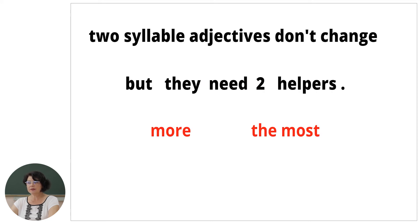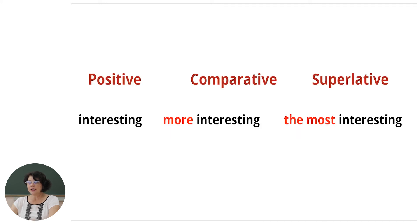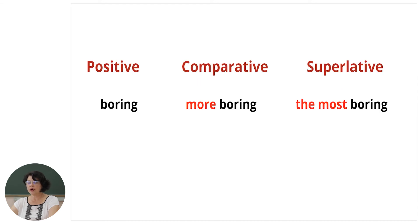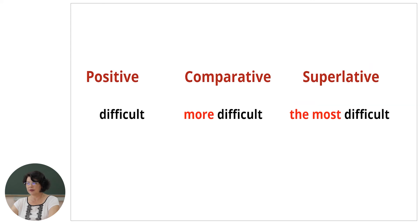Two-syllable adjectives don't change, but they need two helpers. Let's see them: "more" and "the most". Let's see some two-syllable adjectives: interesting, more interesting, the most interesting. Another example: boring, more boring, the most boring. Difficult, more difficult, the most difficult.